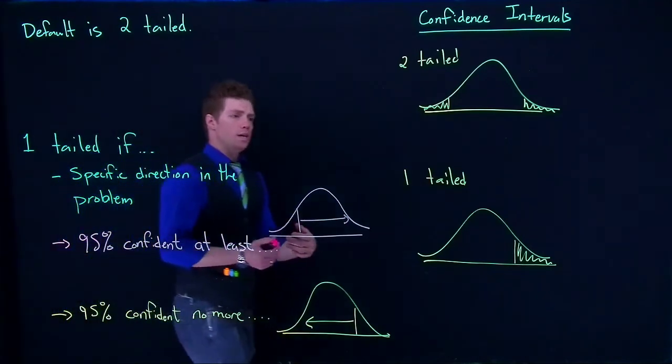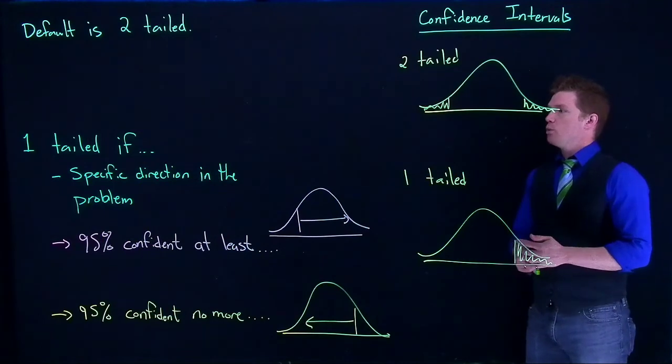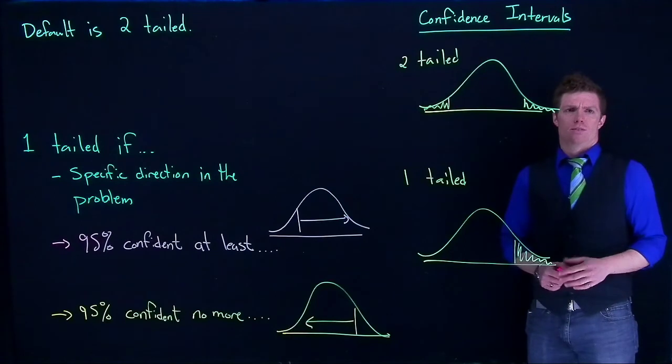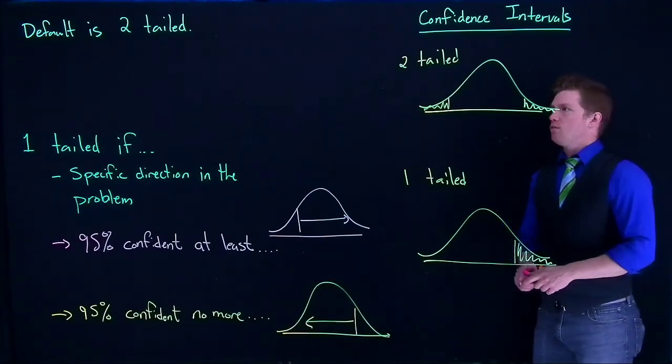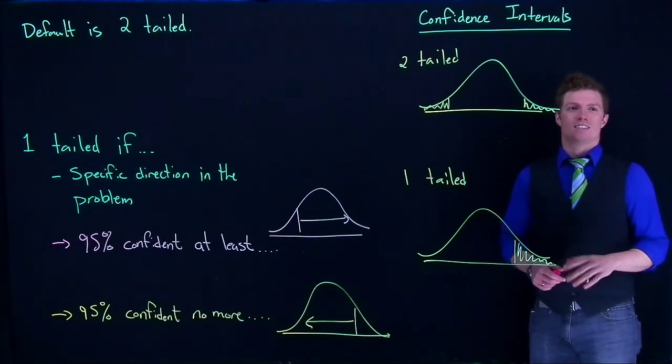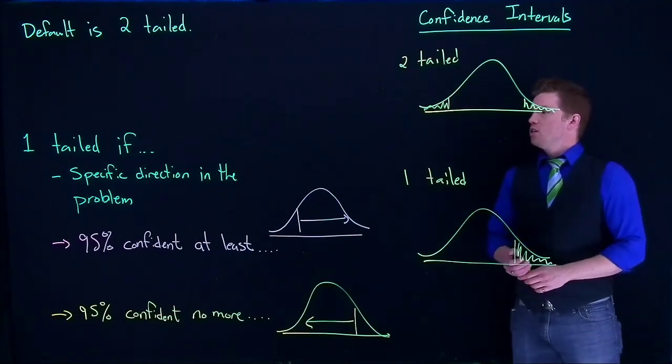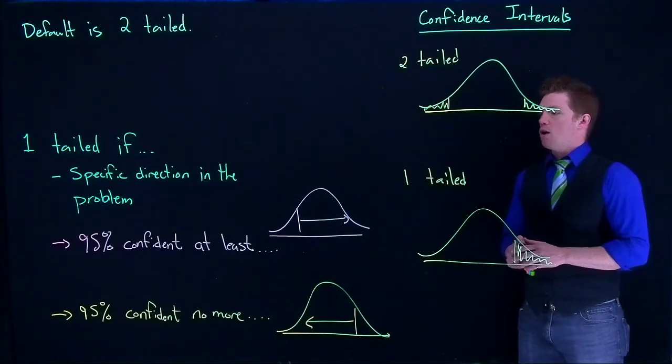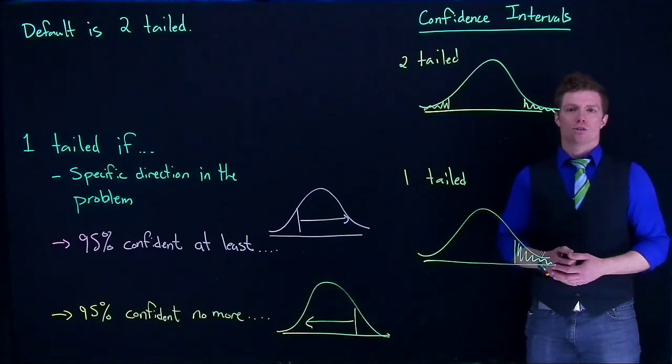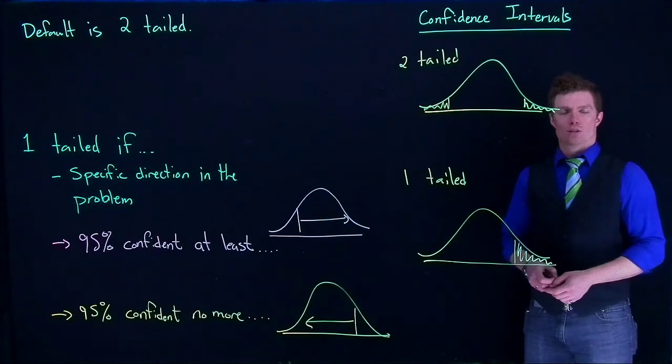So that is how we can tell whether or not in our word problems if we are doing a one-tailed or a two-tailed. So just remember, two-tailed is the default. If you're given no instruction, you're going to do a two-tailed confidence interval. Sometimes you might hear like they want it between some values. That's typically a good indicator that we want a two-tailed as well. One-tailed is we usually have a specific direction in the problem. 95% confidence at least or 95% confident that there is no more. Anyhow, that's how we can tell if we are going to be using a one or a two-tailed confidence interval.